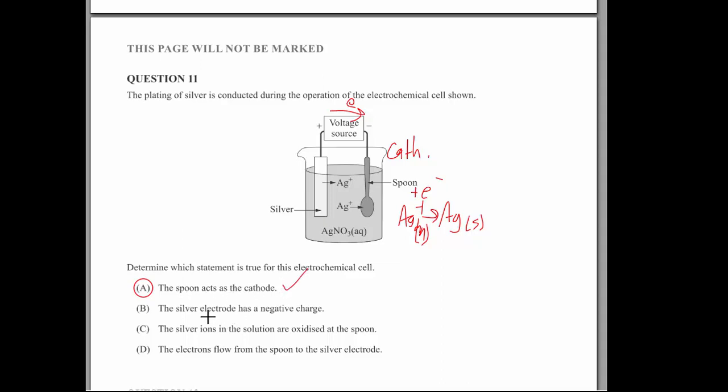The spoon acts as a cathode. Yes. The silver electrode has a negative charge. No. It's a positive one up there. Because that's electrons being forced down there and sucked up from there. The silver ions in solution are oxidized at the spoon. We already said reduction occurs at the cathode. And the electrons flow from the spoon to the silver electrode. And we've already drawn that in the wrong place. So you can see doing the work. I didn't do a full work, but I sort of did most of it.